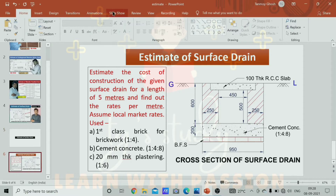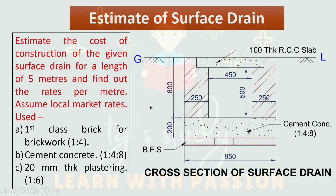Here we can see the problem. The question is: estimate the cost of construction of the given surface drain for a length of 5 meters and find out the rates per meter. Assume local market rates and use: first-class brick for brick work (1:4), second cement concrete (1:4:8), and third 20mm thick plastering (1:6).